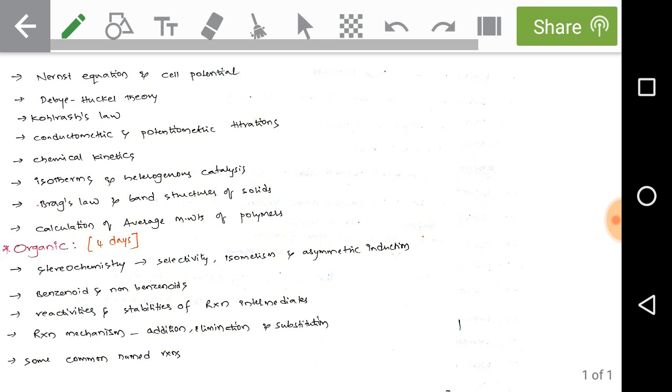Next, organic stereochemistry is very important. We need to get some basics of stereochemistry: stereoselectivity, isomerism, asymmetric induction. Benzenoid and non-benzenoid compounds, reactivities and stabilities of reaction intermediates like carbocations, electrophiles, nucleophiles, and reaction mechanisms with neighboring group participation.